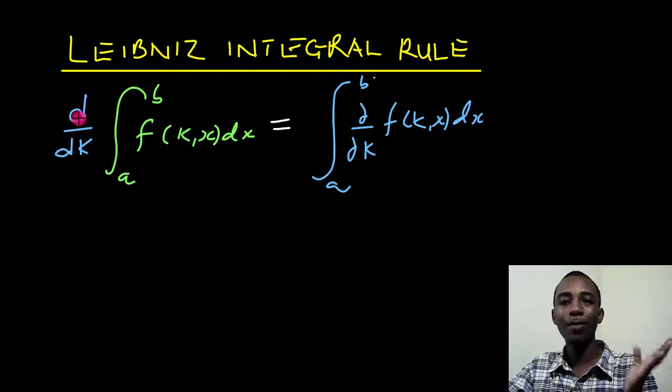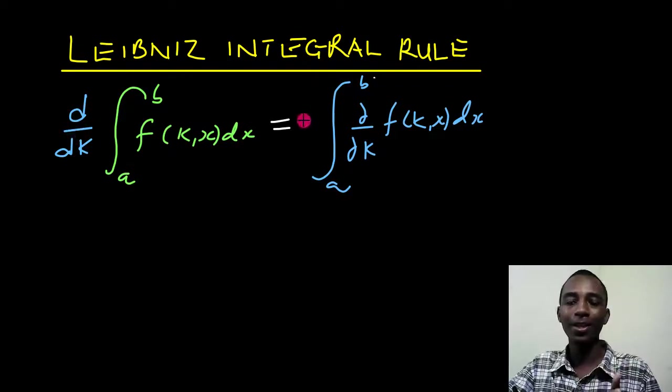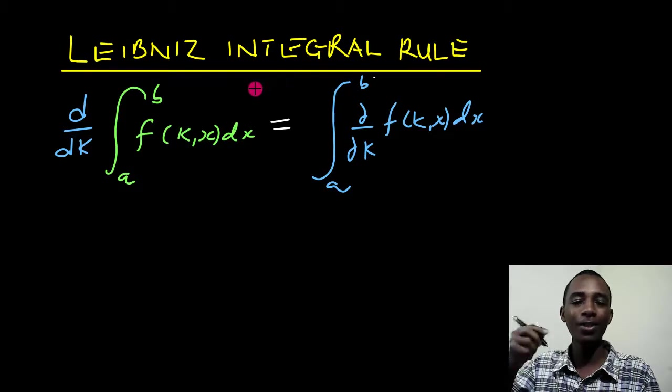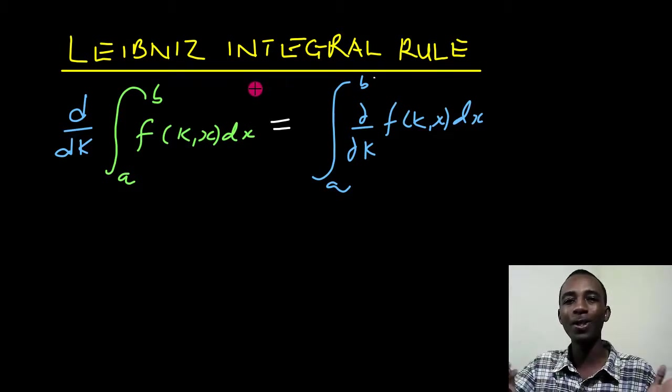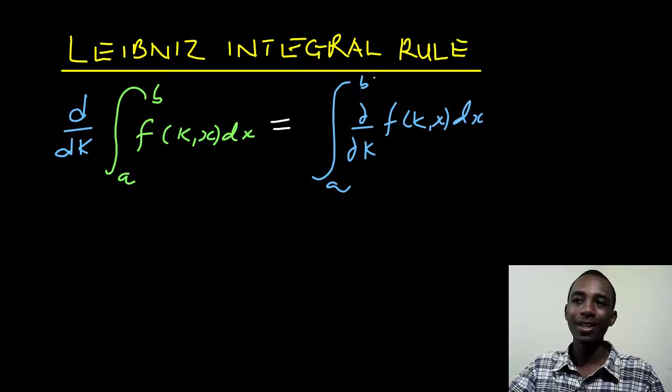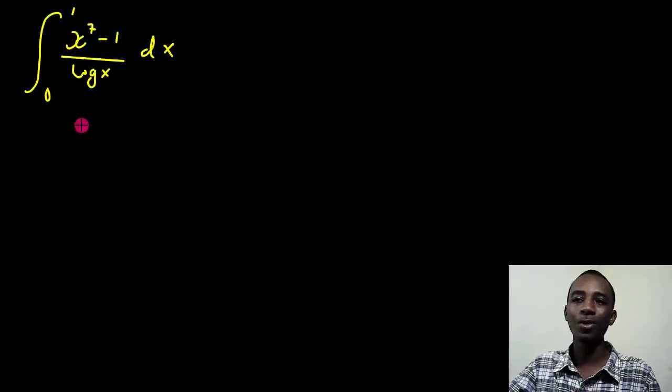So you notice that as I put this derivative inside, then it becomes a partial derivative. This is called the Leibniz integration rule. I'll leave a link in the description to a Wikipedia article where you can read more about this rule. So that said, let's apply this rule to solve this question.